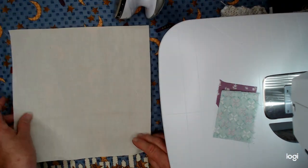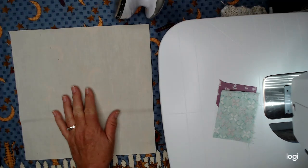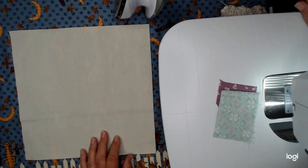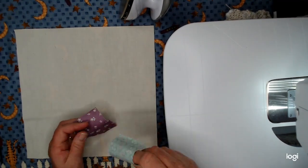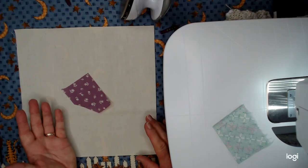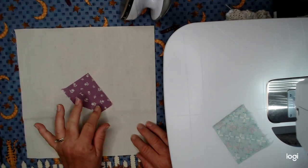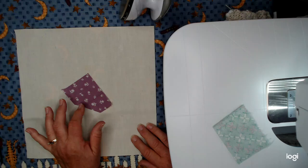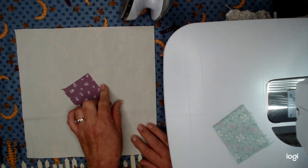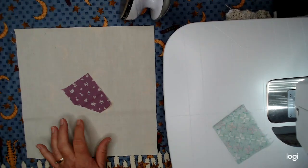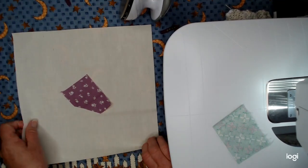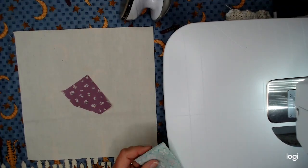So you start with your background piece and we're going to add the first piece. Now your first piece can be as large or as small as you want it to be, but traditionally crazy quilts are made with five sides. So one, two, three, four, five. So I just took a scrap and I cut it to where it had five even sides. So that'll be our first piece.